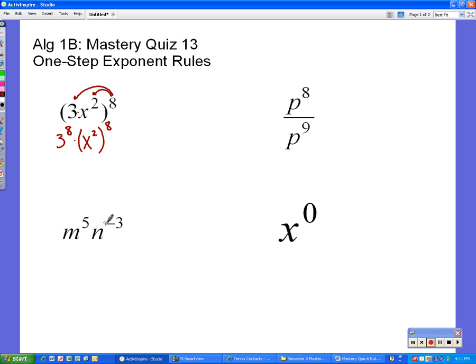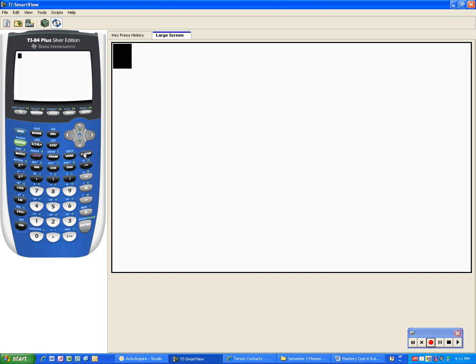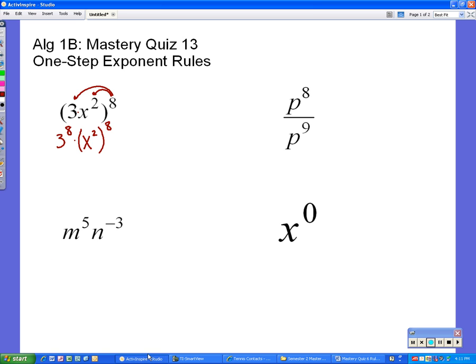3 to the 8th, we just put that one in the calculator and it's a huge number. Remember to put exponents in the calculator, you type the base and then use this little arrow for the exponent. 3 to the 8th turns out to be 6561.